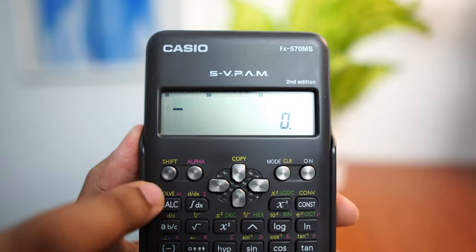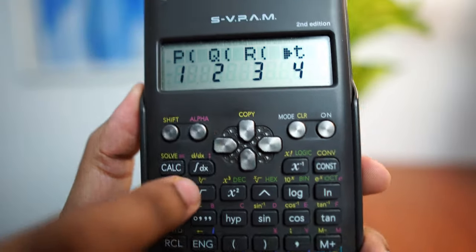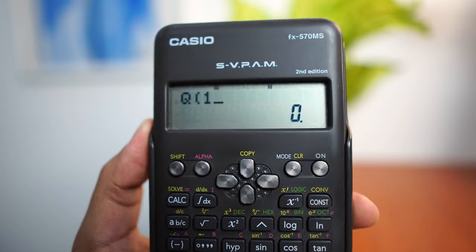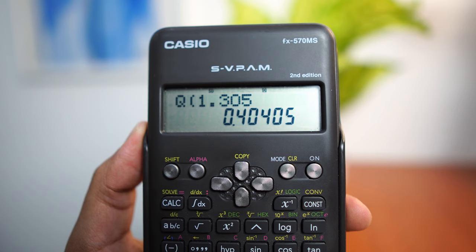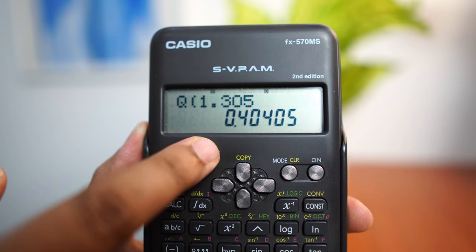again, go to shift, 3 and choose Q, number 2. And key in the Z-score, 1.305. This is the probability, 0.40405.